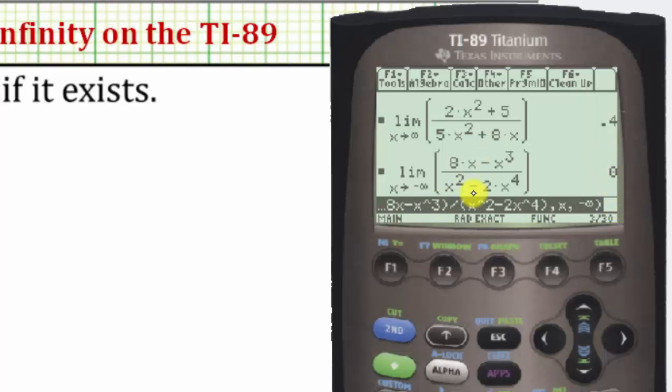which again we should recognize, because notice how the degree of the denominator is greater than the degree of the numerator, and therefore as x approaches infinity or negative infinity, the function value will approach zero.